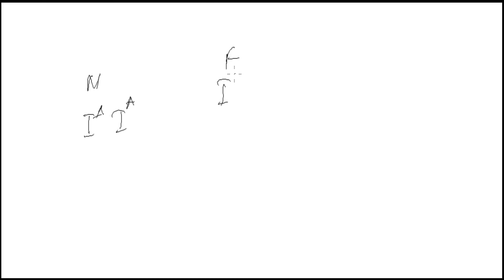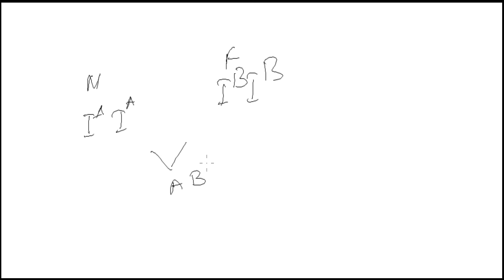Suppose there is a man with blood group A in which he has both genes dominant — AA — and the female has dominant B blood type. The offspring will always be AB, no matter what. If the offspring has any other blood group, it proves that the offspring is not the child of these two people.